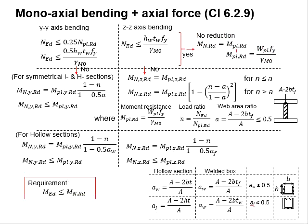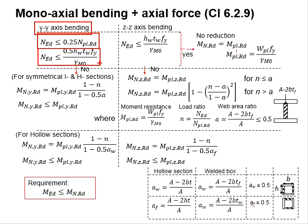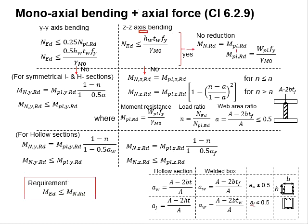For the YY axis, the axial load should be less than 25% of its entire compression resistance or 50% of the axial force of the web. As for the ZZ conditions, the compressive stress of the web can be considered.